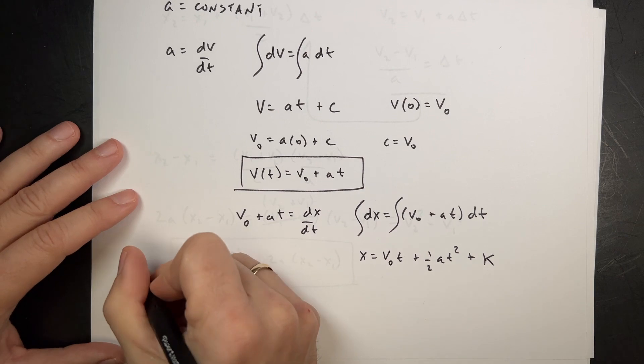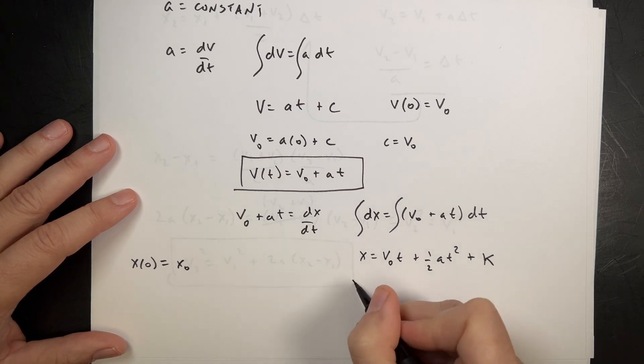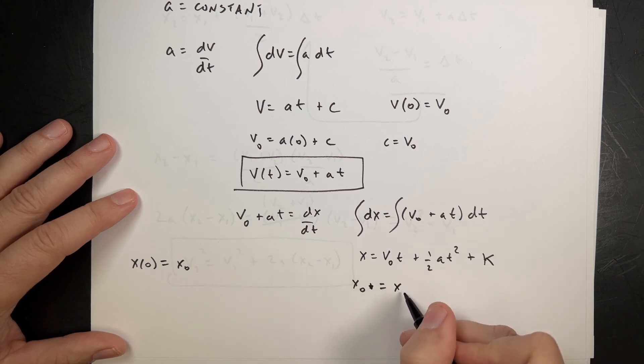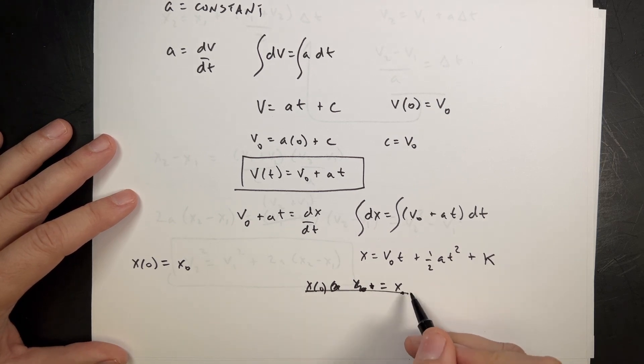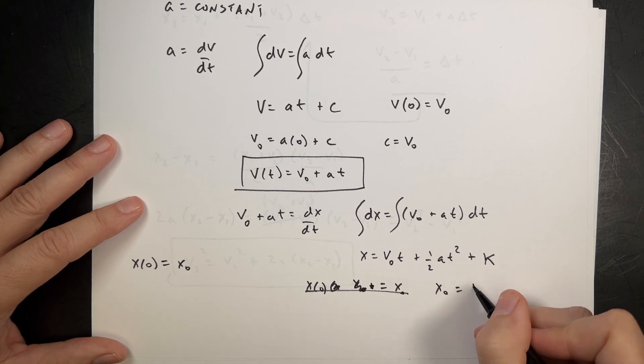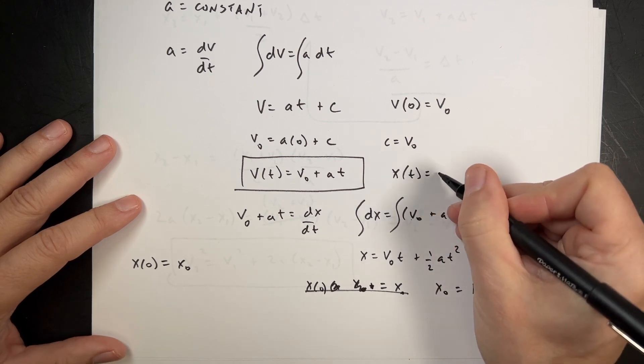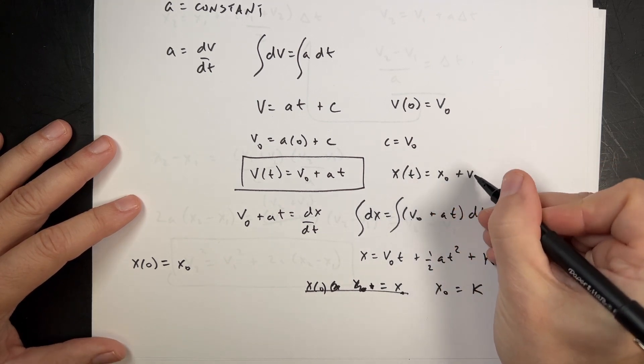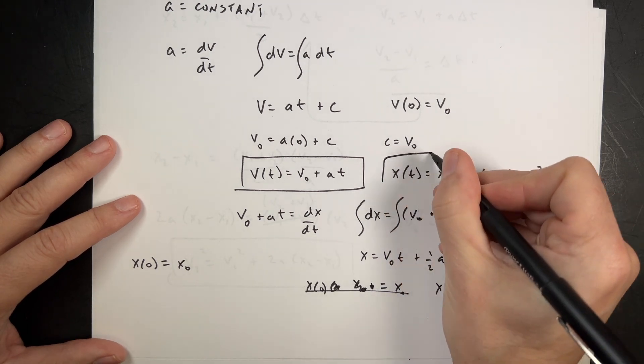I can find that constant by saying x at time t equals 0 is x0. So if I put in t equals 0, I get x0 equals 0, 0, x0, so x0 equals k. So if I put that in, I get x as a function of t equals x0 plus v0 t plus 1/2 a t squared. Again, only for constant acceleration.